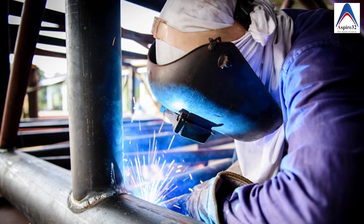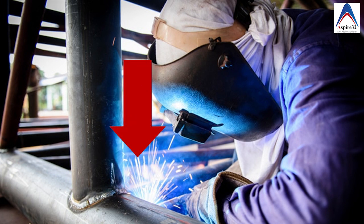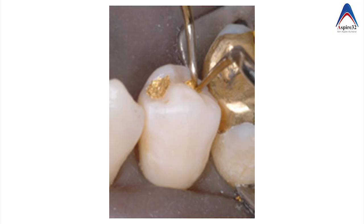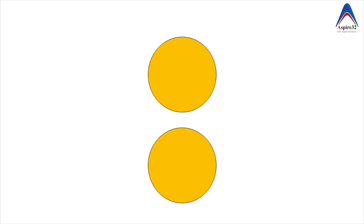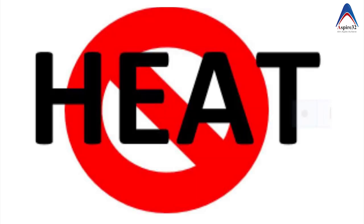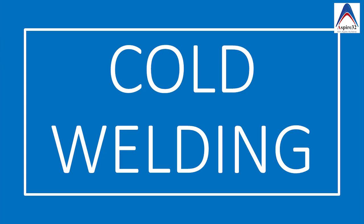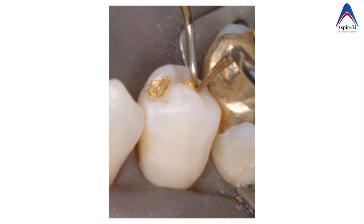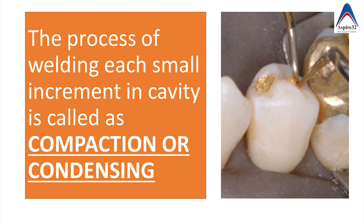If you have observed the welding procedure near the construction site you will see that there is an enormous amount of heat which is used to join the two metal parts. But the direct filling gold can be fused in your clinical practice without use of the heat. And this property of welding without the presence of heat is called as cold welding which makes the direct filling gold suitable for to be used as a direct restorative material. And this procedure of welding the increments of direct filling gold is called as compaction or condensing.